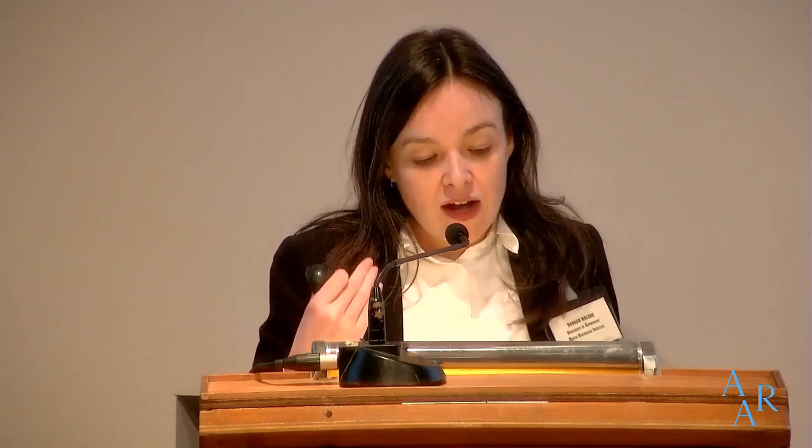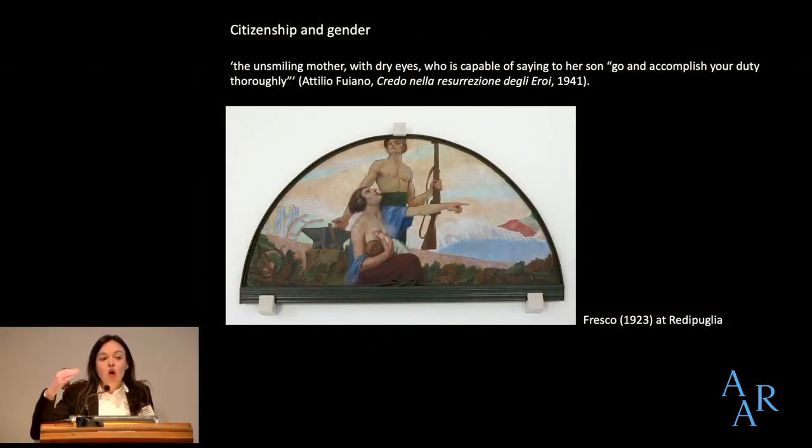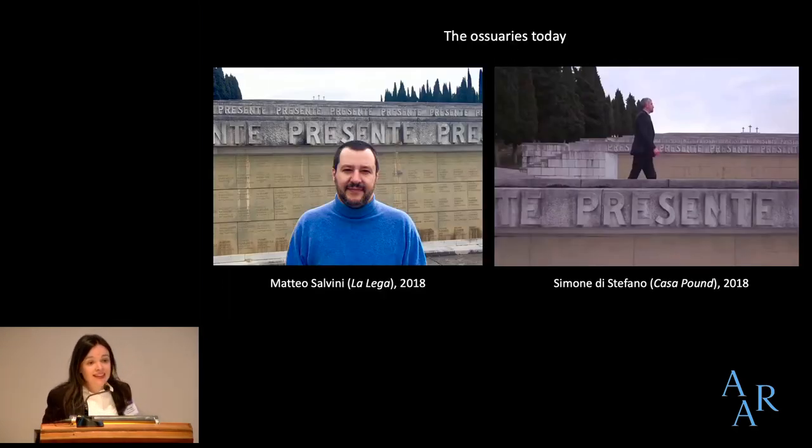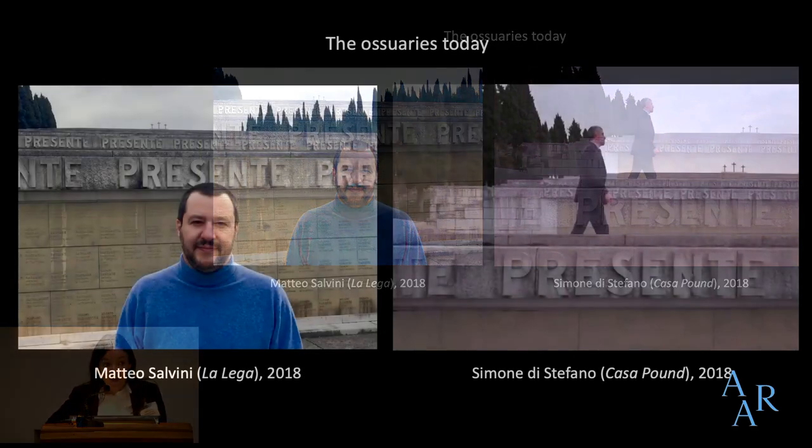As a side note, the fallen soldiers offer a model for the male citizen, but there were also models for female citizens. As represented in a fresco at Redipuglia, the ideal cittadina is she who sends her husband to war. A book about Redipuglia praised the unsmiling mother with dry eyes who is capable of saying to her son, 'Go and accomplish your duty thoroughly.' In time, fascism fell, but the ossuaries remained.